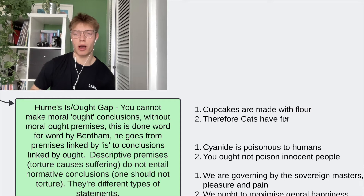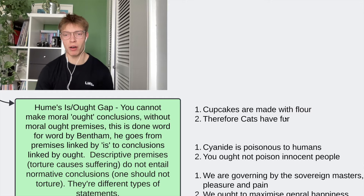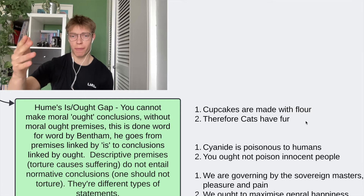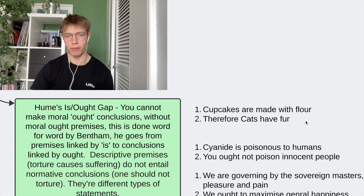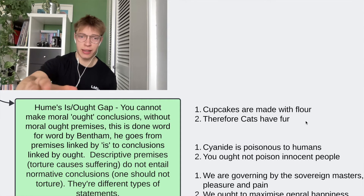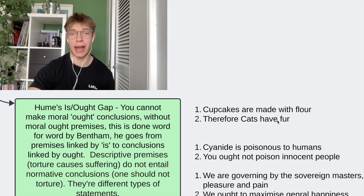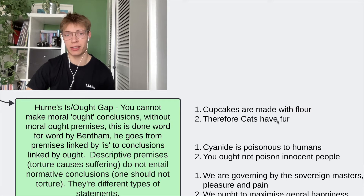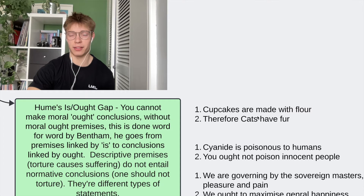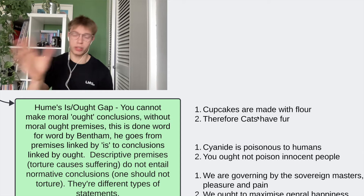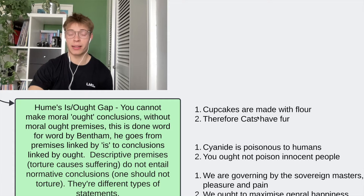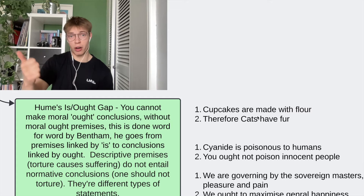The first argument: cupcakes are made with flour, therefore cats have fur. That's not a very good argument because the premise 'cupcakes are made with flour' doesn't lead to the conclusion 'cats have fur' — those two things don't link. Conclusions about cats must be proved by premises that also have cats in them. For example: all mammals have fur, cats are mammals, therefore cats have fur. That's a valid argument.